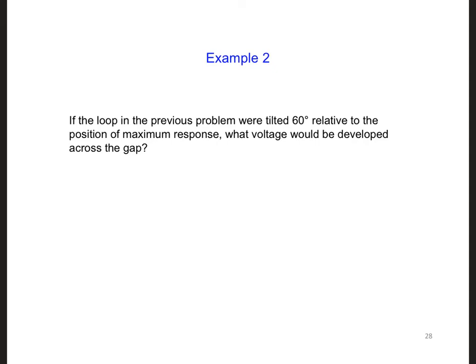Now, if we were to tilt the loop by 60 degrees relative to the position of the maximum response, now what voltage would be developed across the gap? Well, now we can write our B field.